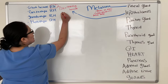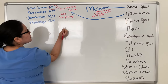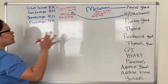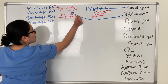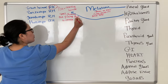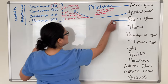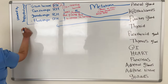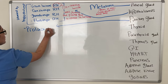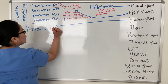Specifically, the hypothalamus tells the anterior pituitary gland to release its hormones. Next we have our pituitary gland — this secretes prolactin, and prolactin increases or stimulates milk production.